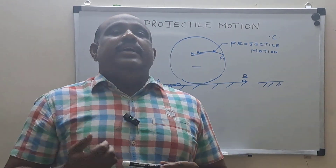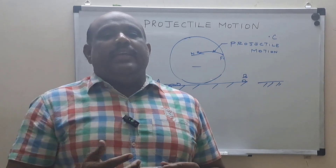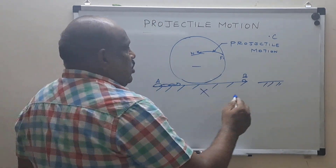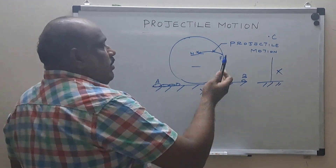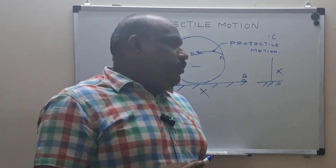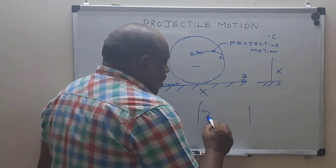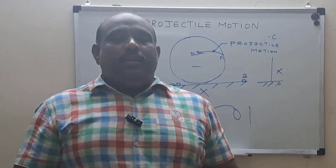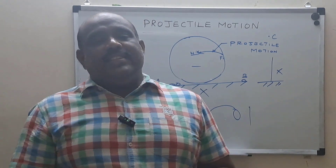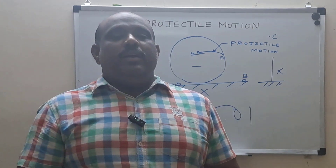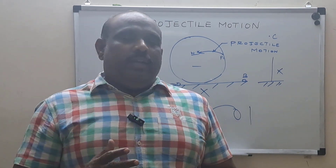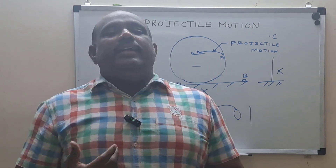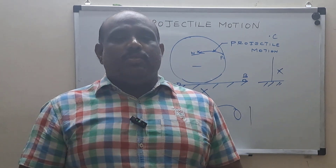Any object which is given an initial velocity and whose path is influenced by gravity is known as projectile motion. These two earlier cases are not projectile motion, whereas the cricket ball case is. Even in football, if a player kicks the ball into the air and it lands somewhere, that motion is also called projectile motion — an initial velocity is given and the path is governed by gravity.